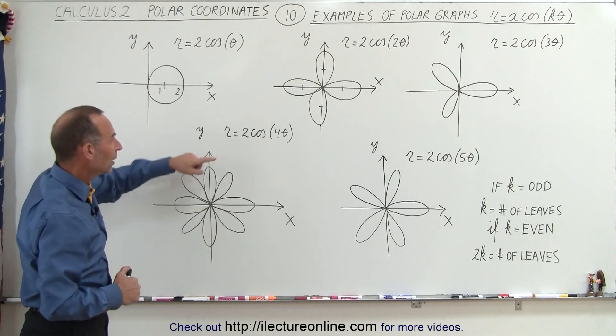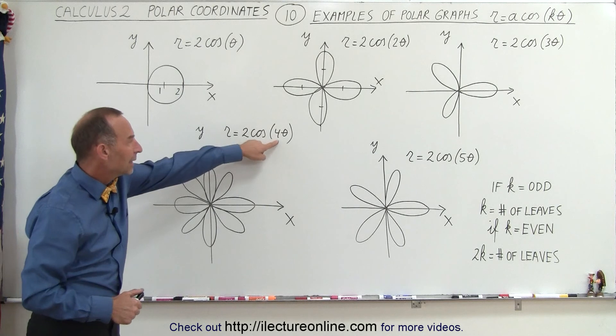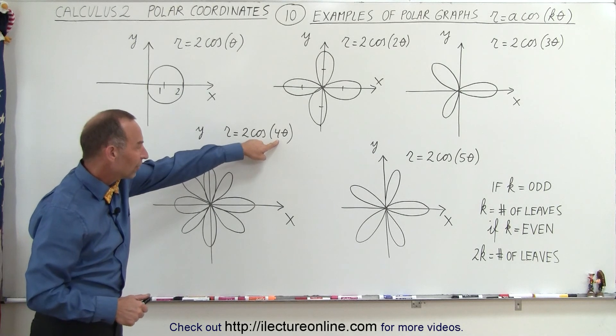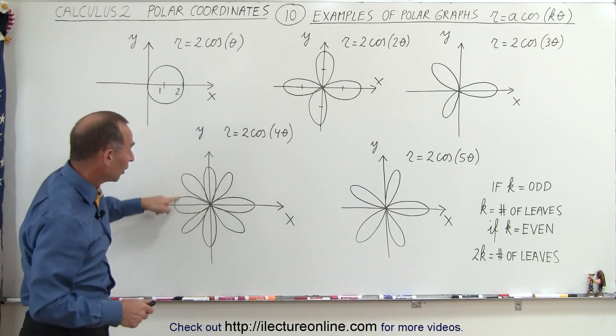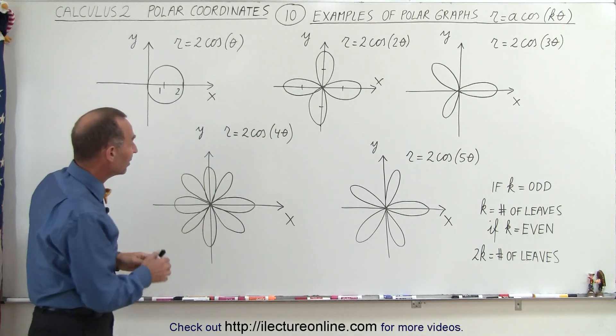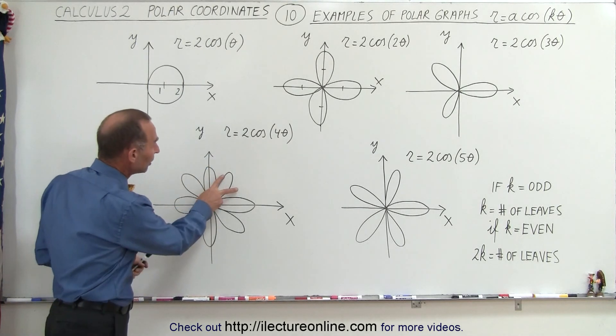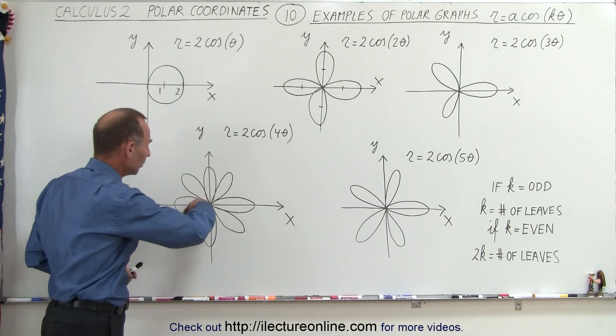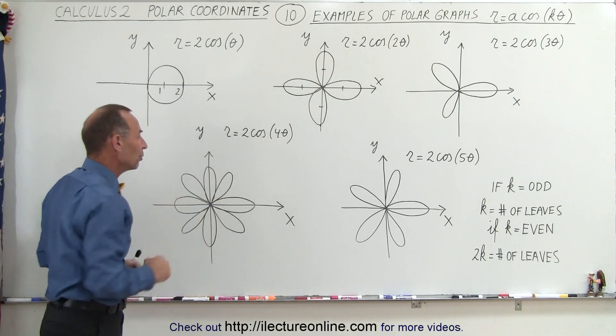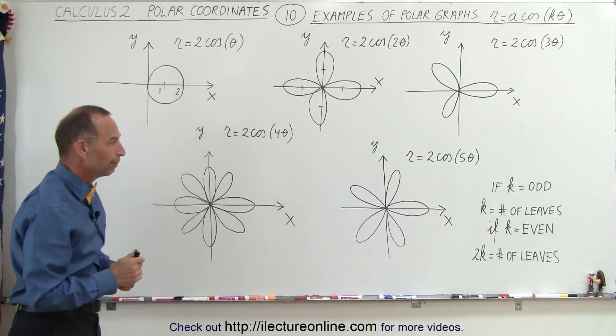You can assume then when k is equal to 6, again you will have four leaves, one on each of the axes, and then two leaves in between each pair of adjacent axes, and so forth.